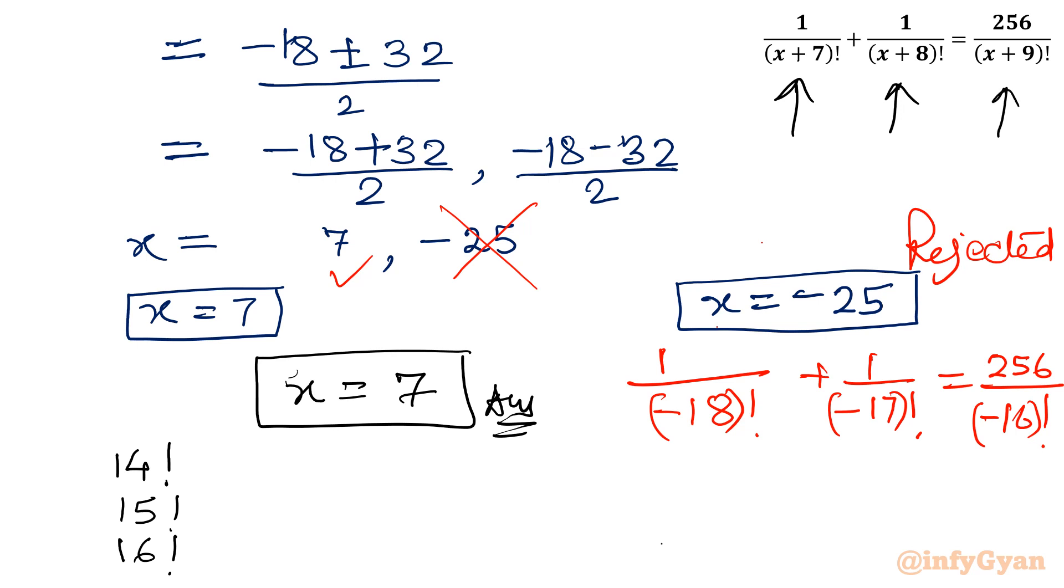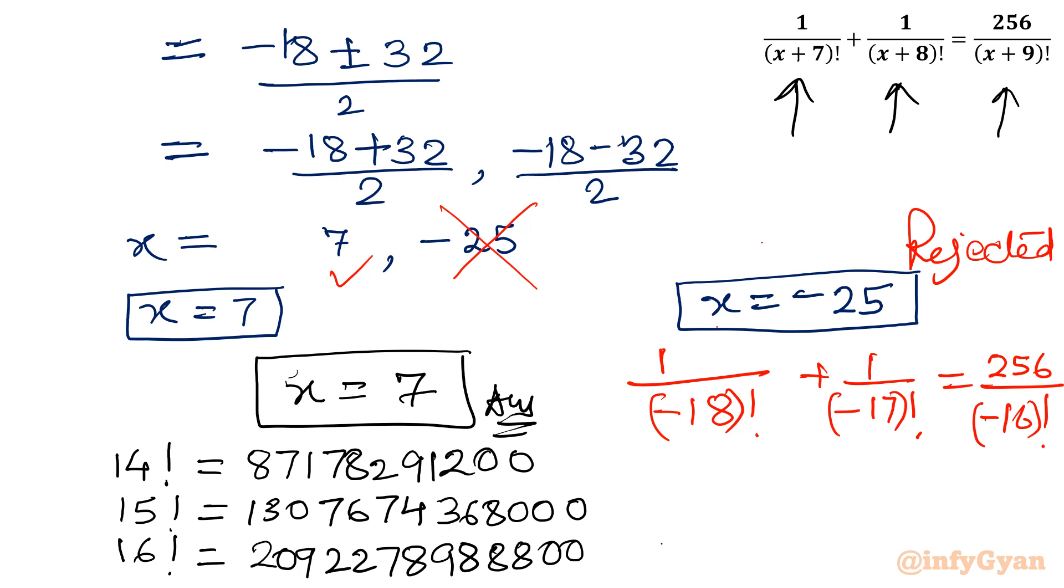If you want to see only, I can give you only glimpse. 14 factorial is 87178291200. See 15 factorial is 1307674368000. And see the value of 16 factorial is 20922789888000. If you want to check, you can put over there. It will satisfy the equation.